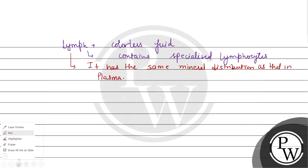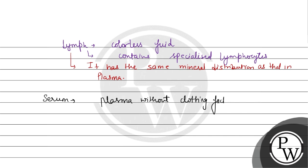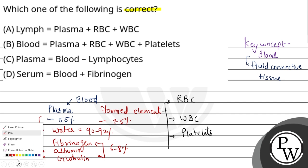If we talk about serum, what is serum? Plasma without clotting factor is known as serum. When you remove the clotting factor from plasma, it is called serum.